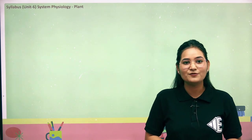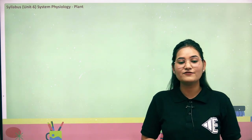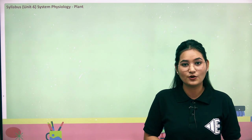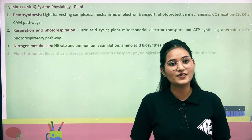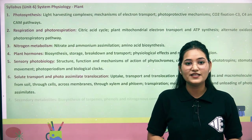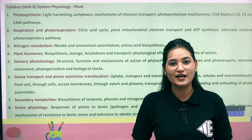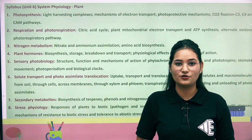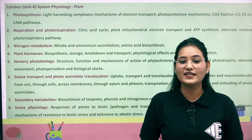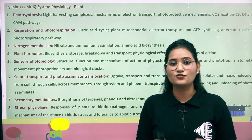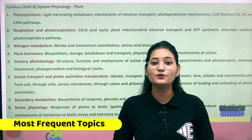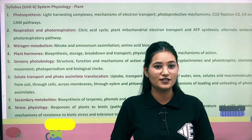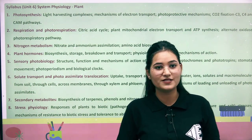Unit 6 is basically system physiology and plant, which we also call plant physiology. In this unit we have a total of 8 sections, and in each section there are 5 to 6 topics. The total number of topics comes to around 45 to 50. Let's first get to know these topics.